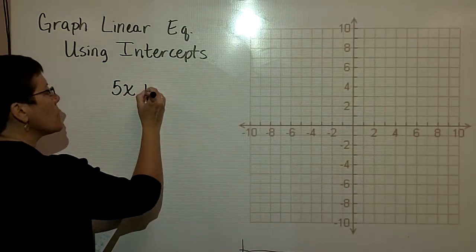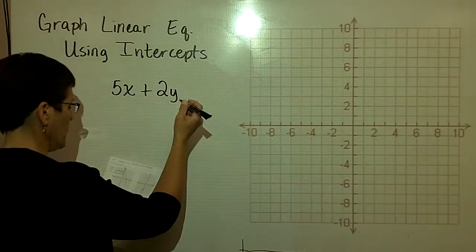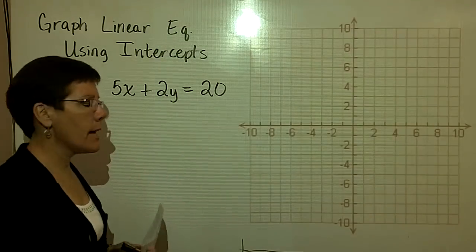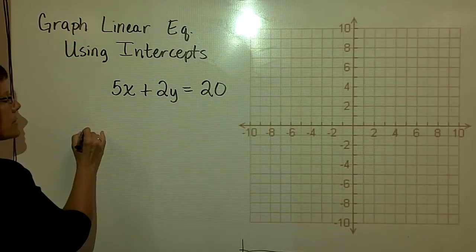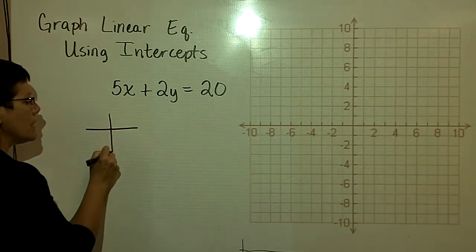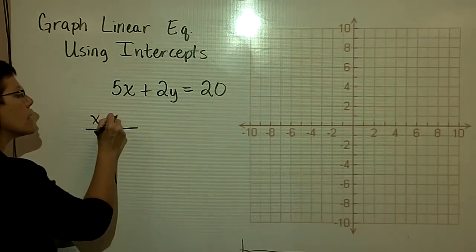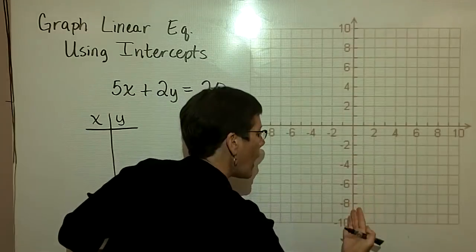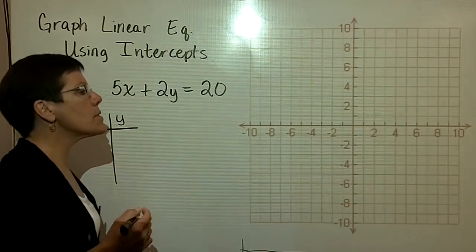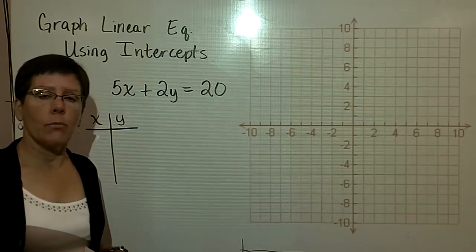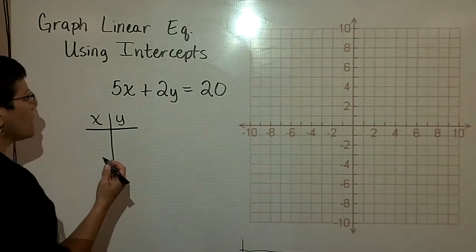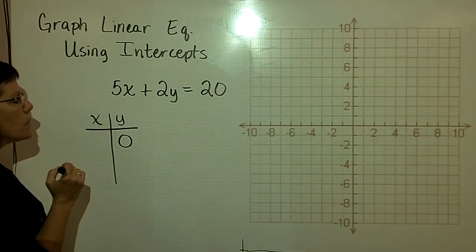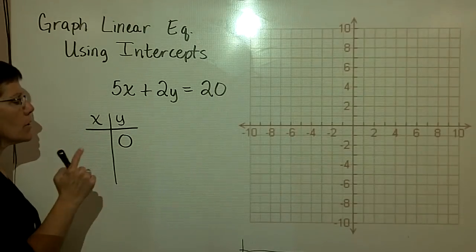The first couple examples, I'm going to have the variable terms on the left-hand side and the constant on the right-hand side. The intercept method says find the x-intercept and the y-intercept. And what that means is to find the x-intercept, you let y equal zero. Let's go ahead and do that one. You'll understand that.